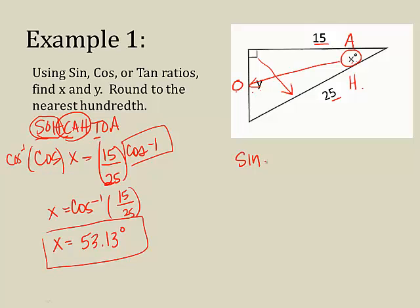So, I'm going to say the sine of this angle I just found, 53.13, equals the opposite over the hypotenuse. Now you're back to what we did a couple days ago.